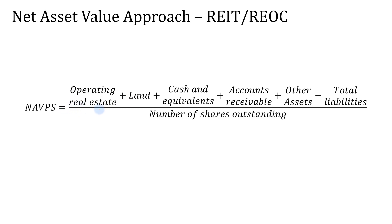If there's a discount in the REIT's share price from the net asset value per share, we can interpret it as a potential undervaluation. If there's a premium in the REIT's share price to the net asset value per share, that could suggest potential overvaluation, unless there were indications of positive future events like a successful property development completion or expected high value creation by the management team.